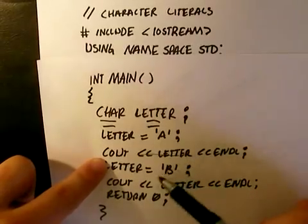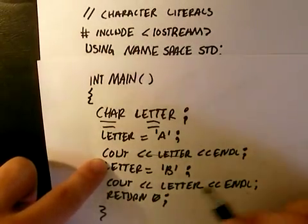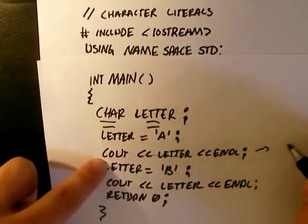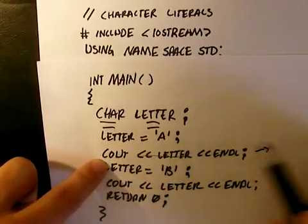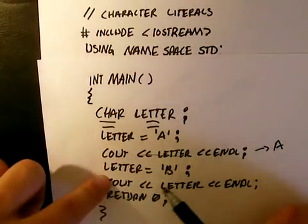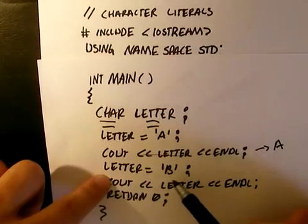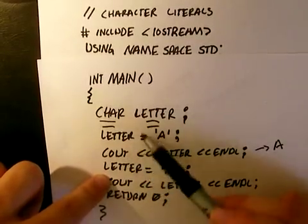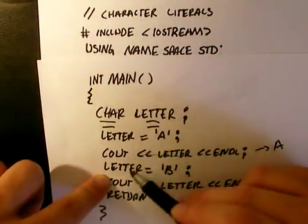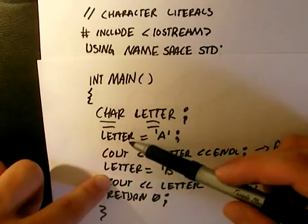A has to be in single quotation marks to distinguish that it is a character. Then we are going to cout, which is we are going to send it out to the computer. We are going to cout as A. So in this case, at this point letter is defined as A. In this point letter is defined then as B. Notice it is the same variable, letter and letter.